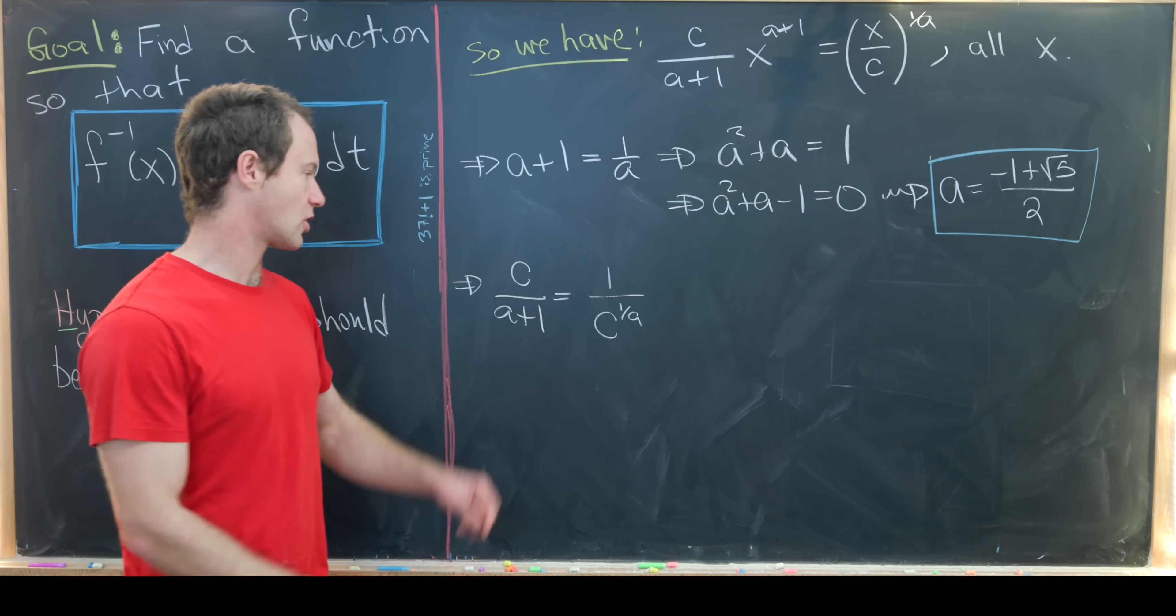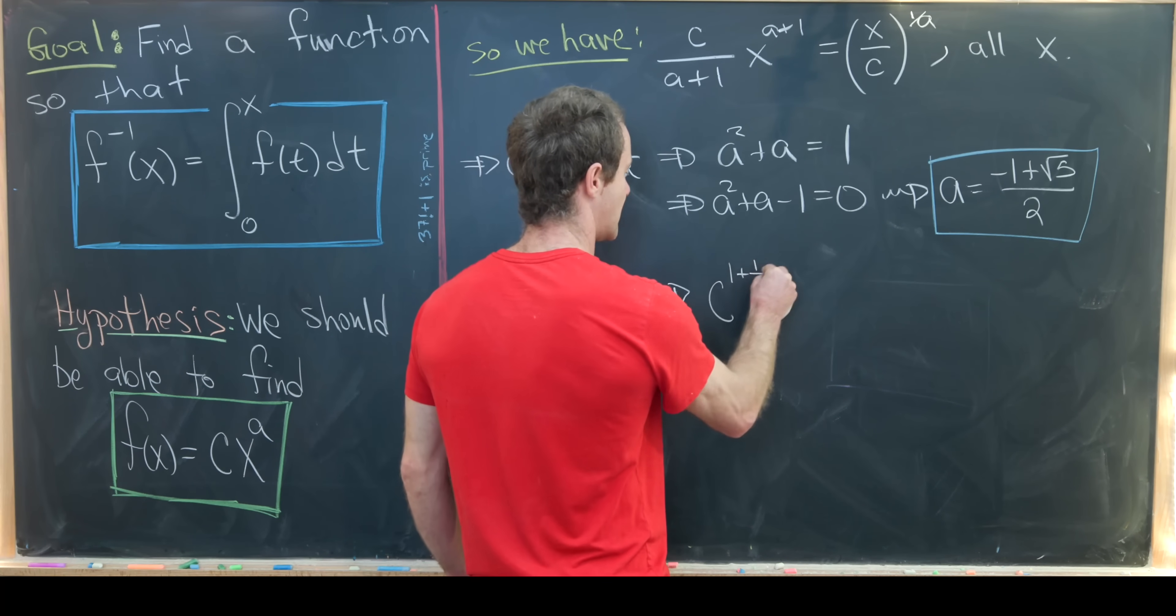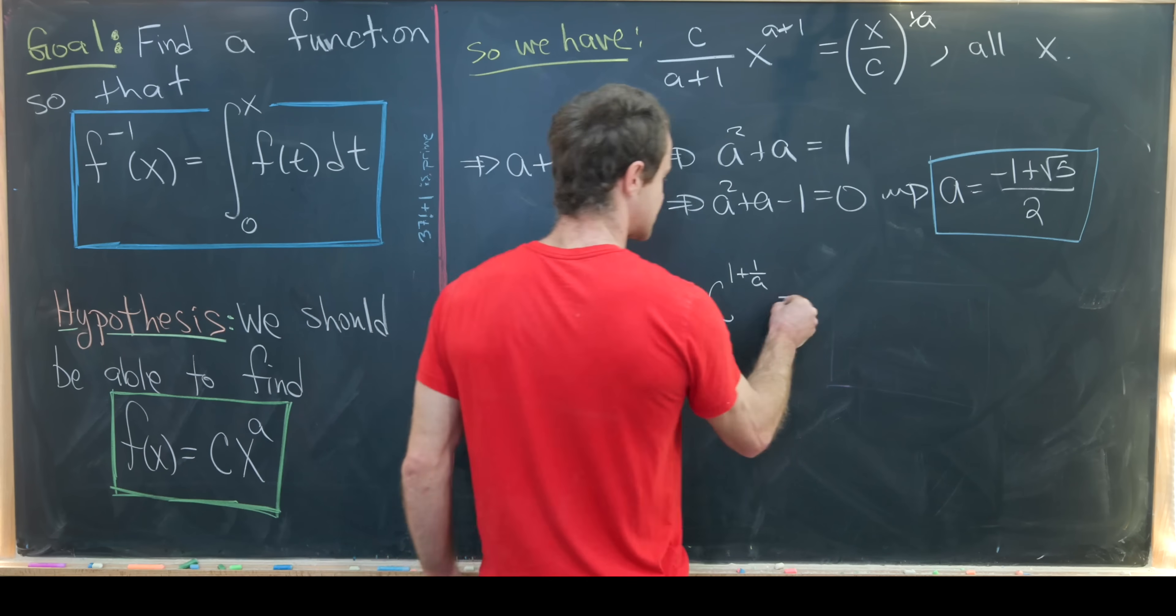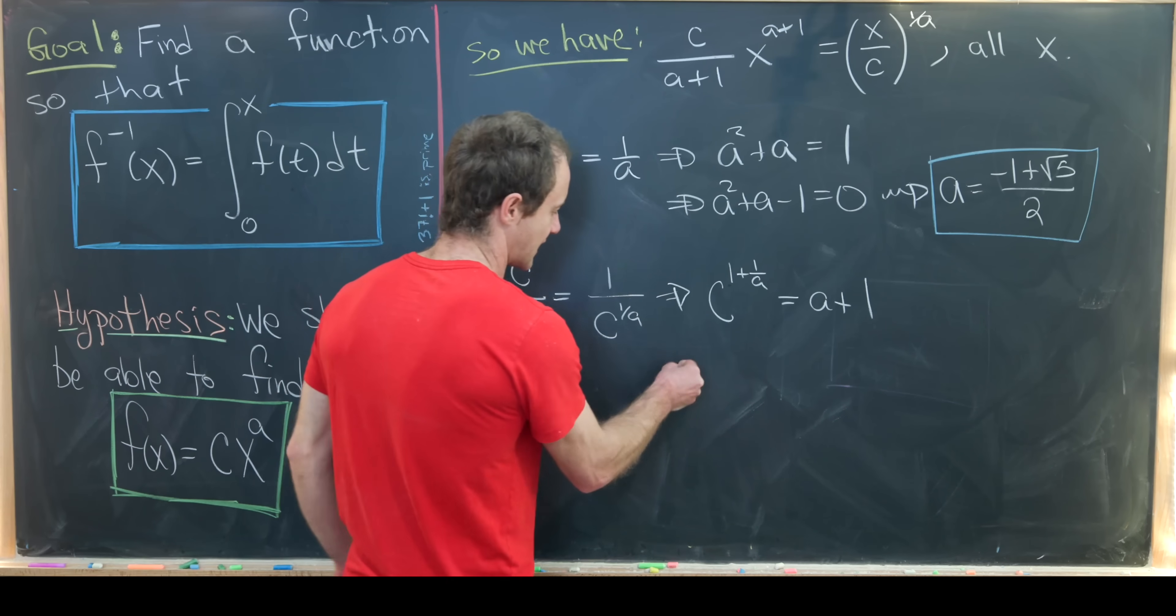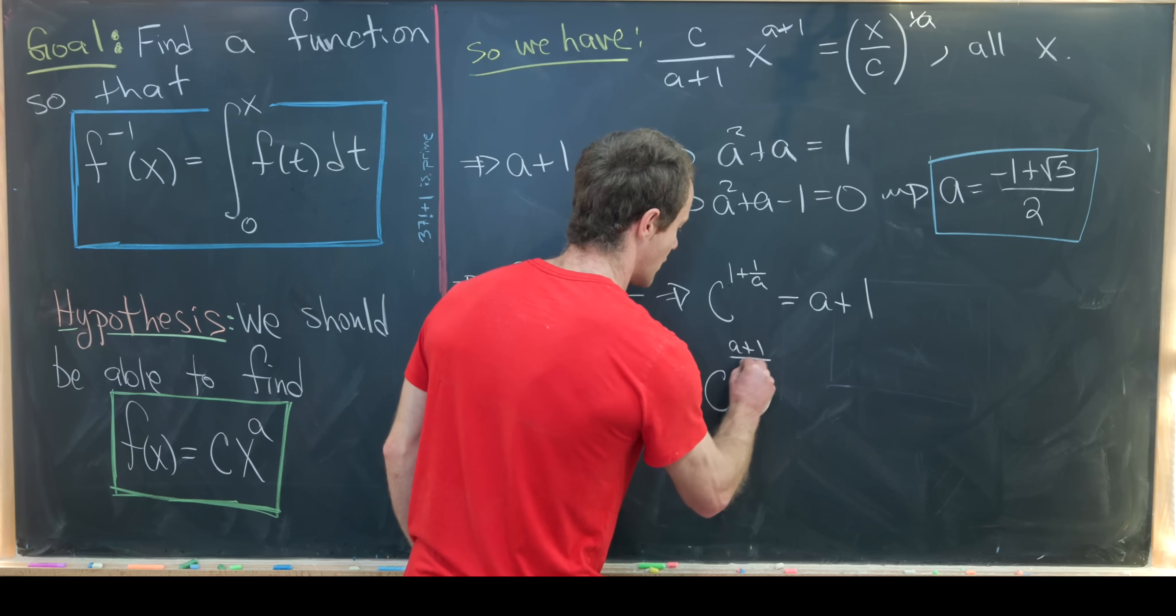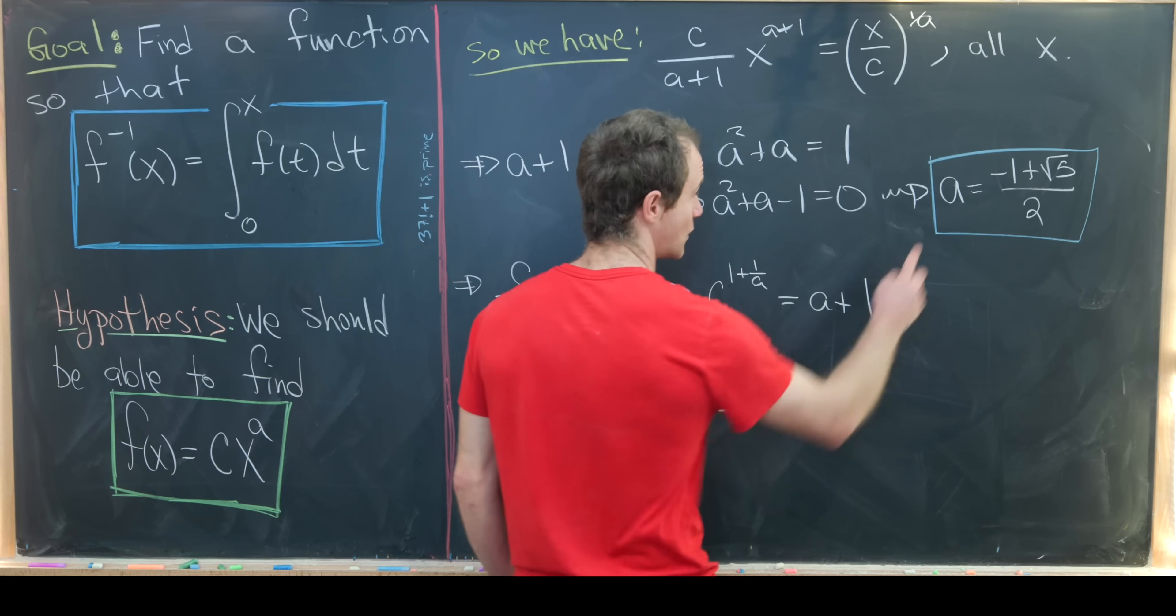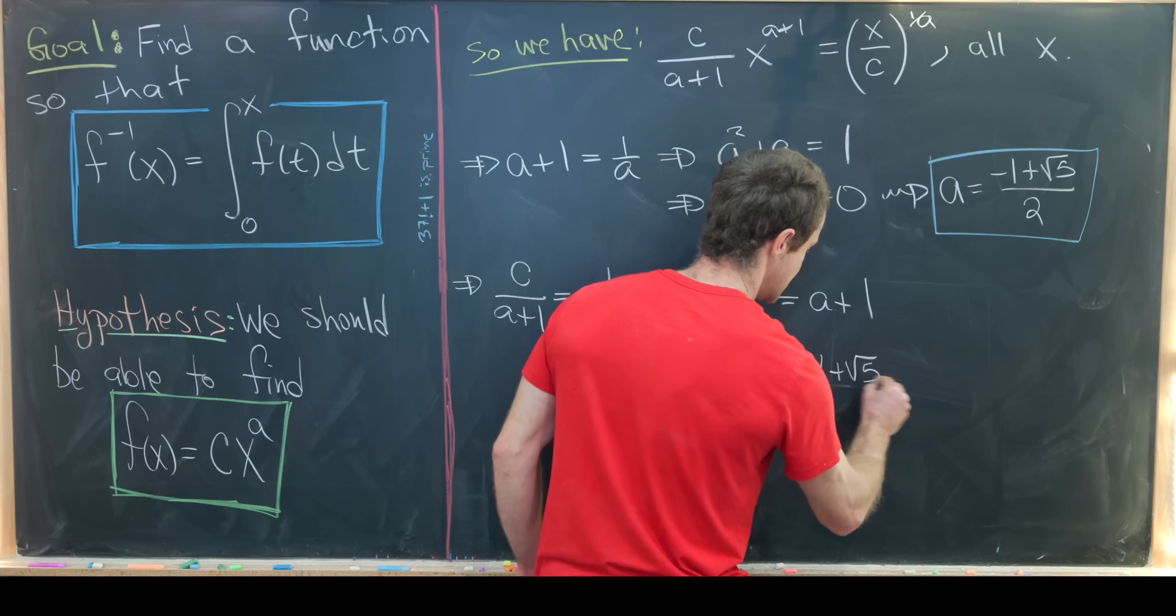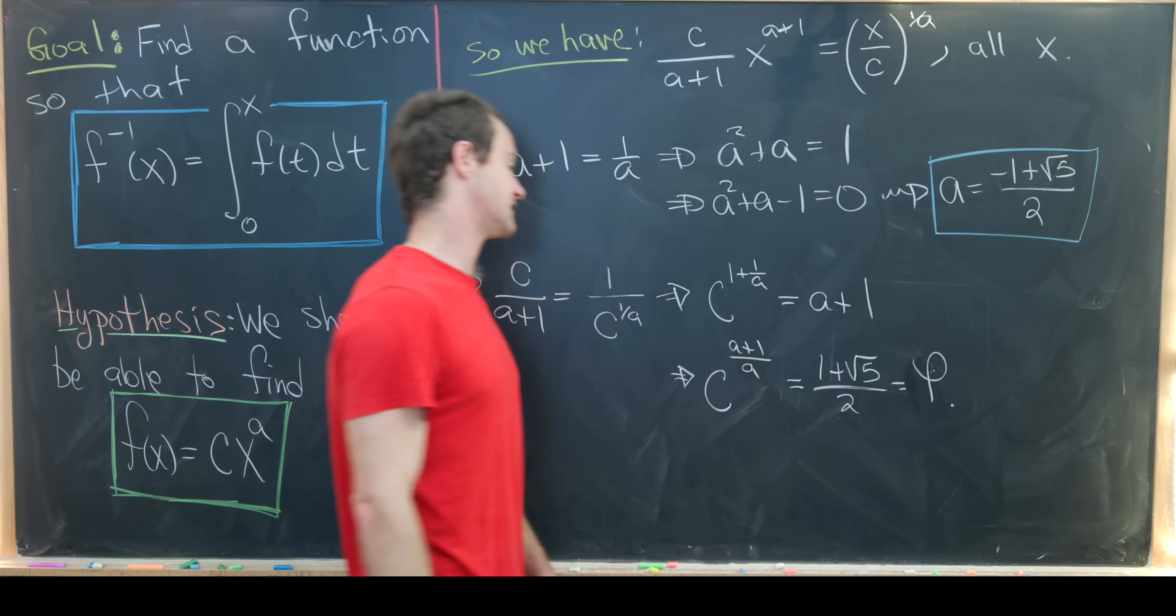Let's cross multiply: that gives us c to the (1 + 1/a) when we multiply this up equals a+1. Next, let's combine these by finding a common denominator: c to the (a+1)/a equals a+1. But a+1 will turn this minus 1 into a plus 1, so we'll have (1 + root 5)/2, which is the golden ratio, and I will denote that as phi.